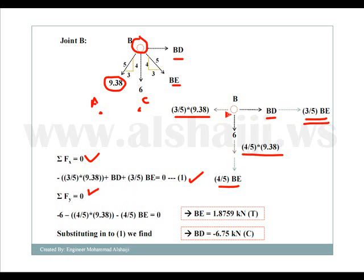And if I do the sigma y, it's going to be minus 6 minus 4/5 times 9.38 minus 4/5 times BE equals zero. I can solve for BE, and it turns out to be 1.8759 kilonewtons. And if I substitute BE back into equation one, I'll end up getting BD, which is minus 6.75 kilonewtons.